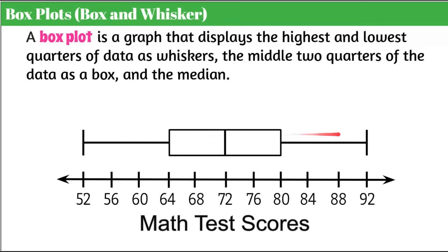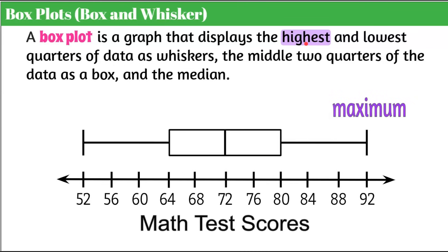This example is pretty evenly spread out, meaning the whiskers are almost identical in size, but they don't need to be. A whisker could be small or large, the box could be smaller or larger, and the median line could be skewed left or right. The maximum value is marked by the end of the right whisker.